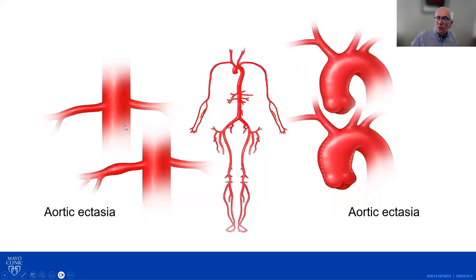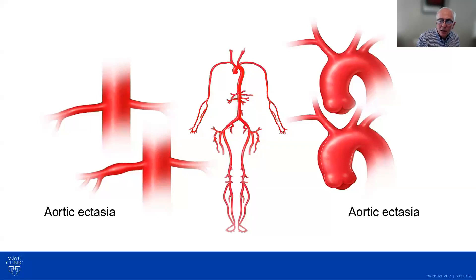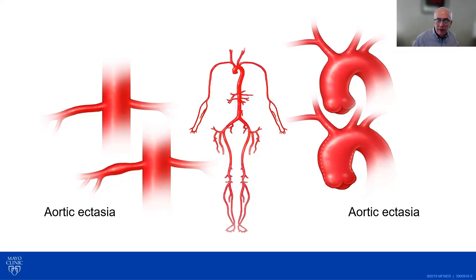Aortic ectasia is an enlargement of an artery or the aorta which does not quite meet the criteria for aneurysmal enlargement. On the left, you can see that a branch artery — in this case the artery that goes to the right kidney — is slightly larger than a normal renal artery above it. This would be an example of renal artery ectasia. On the right, you can see the ascending aorta is slightly enlarged in the bottom diagram compared to the upper normal one — an example of aortic ectasia affecting the ascending aorta.